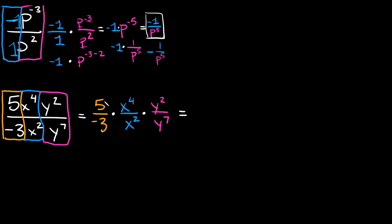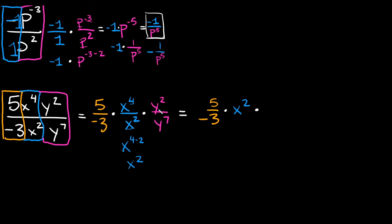So let's simplify this. Starting with our numbers: 5 over negative 3, we can't reduce that anymore, so we just write that as 5 over negative 3. Coming to our next fraction — x to the 4th over x squared — this is going to be x to the 4 minus 2, and 4 minus 2 is just 2, so this would be x squared. And then we're going to multiply that by the last fraction — y squared over y to the 7th. We have a y and a y, so just keep the y and subtract the exponents: 2 minus 7. So this would be y to the negative 5th power.